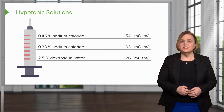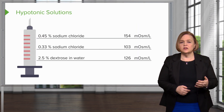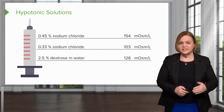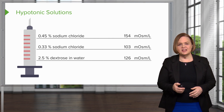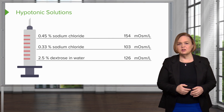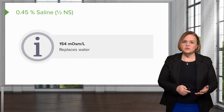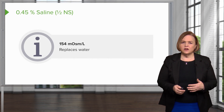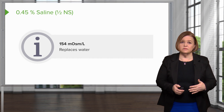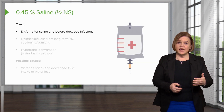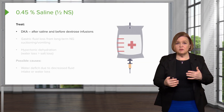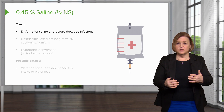Here we have a great list of the hypotonic solutions, all on one slide. So half normal saline replaces water, but remember it's a hypotonic solution. We can use it for DKA — after saline and before dextrose.